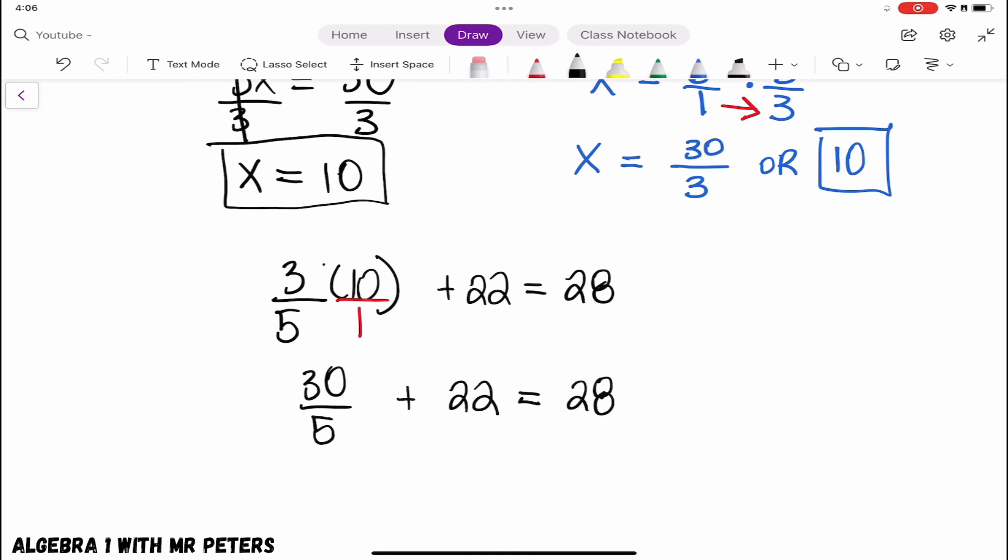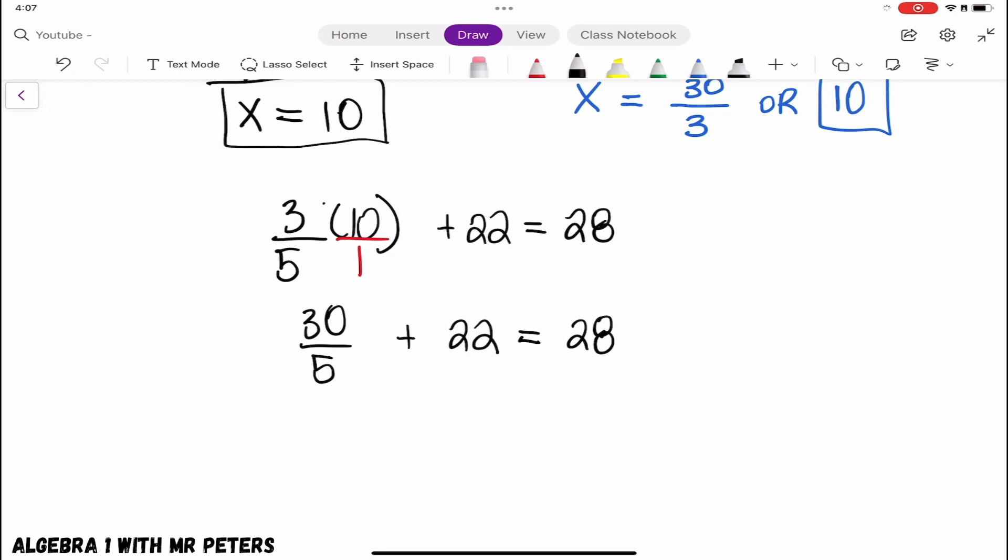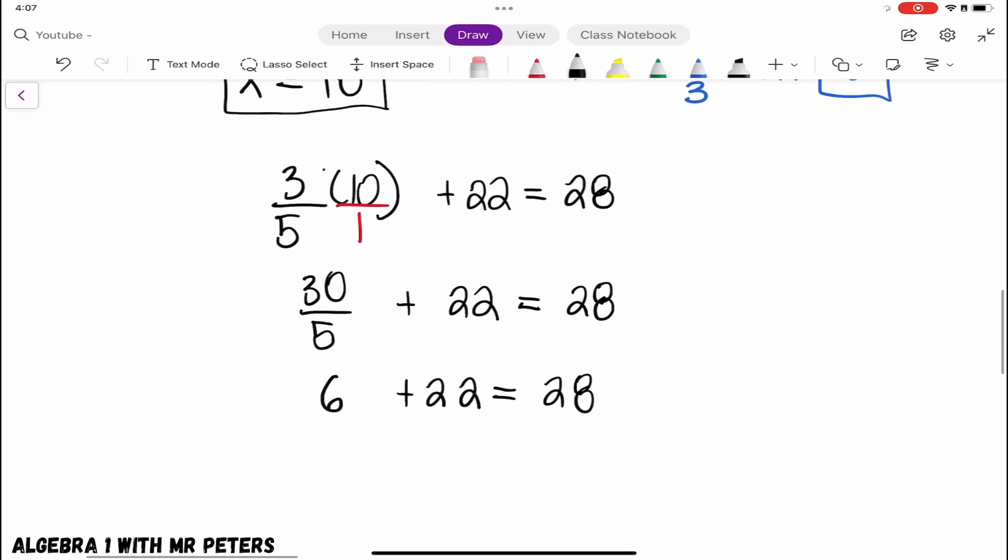So guys, remember, simplifying our fraction, 30 over 5 is just 6. And once we simplify this to 6, we're going to rewrite the rest of our equation and then add our like terms. After we add 6 and 22, we know that 28 is absolutely equal to 28.